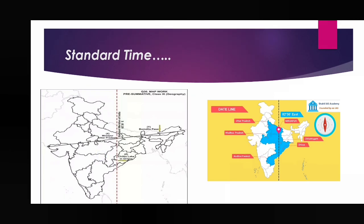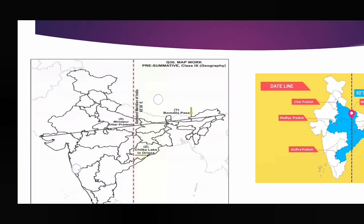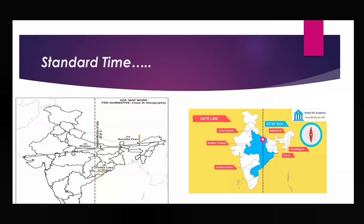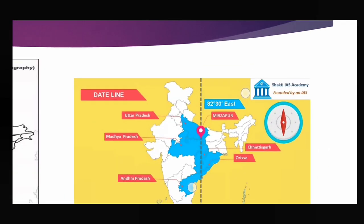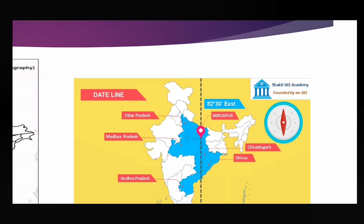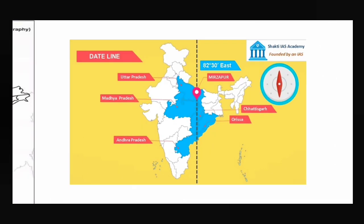The benefit of standard time is that you do not need to adjust your watch while moving from Gujarat to Arunachal Pradesh — all of India experiences the same time. The standard meridian of India is 82 degrees 30 minutes east. It passes through Mirzapur, which is in Allahabad, Uttar Pradesh, and also through Madhya Pradesh, Andhra Pradesh, Chhattisgarh, and Odisha.